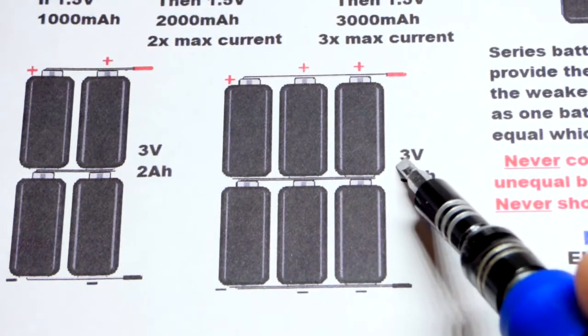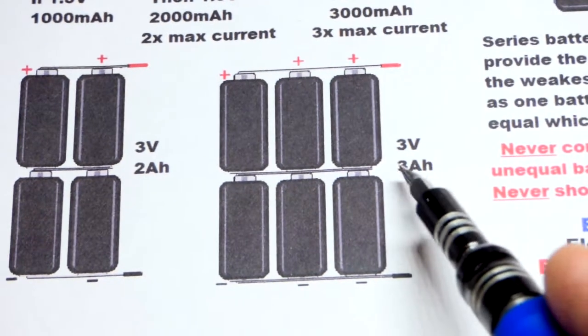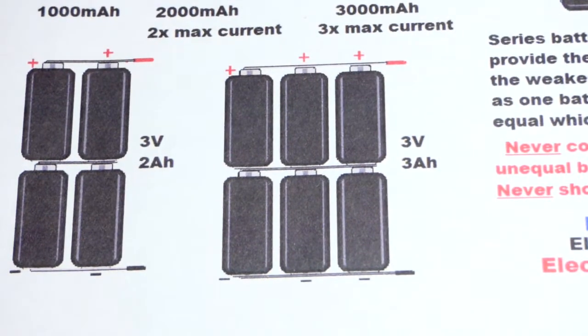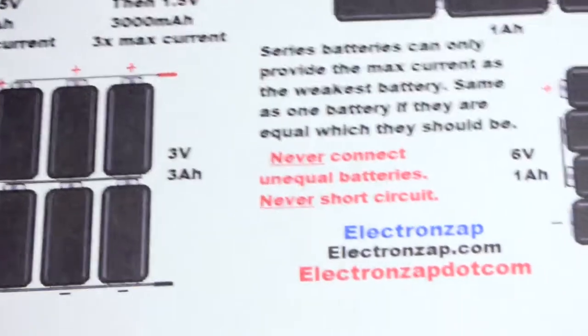So that's what you do when you have a voltage you like but you need either more current flow at any given time, or more current for a longer period of time. You can just keep adding them in parallel.